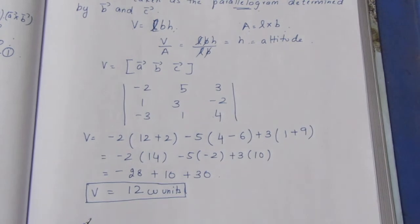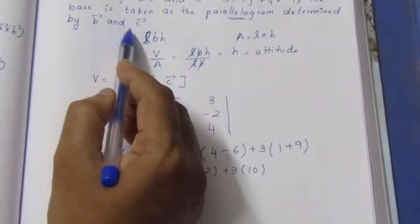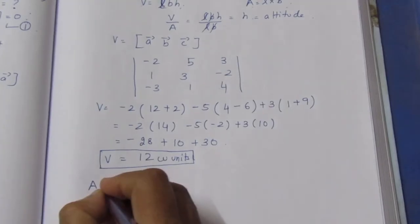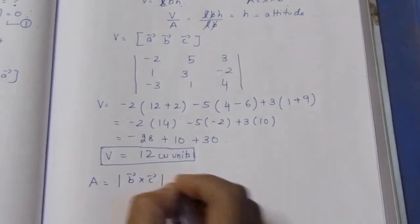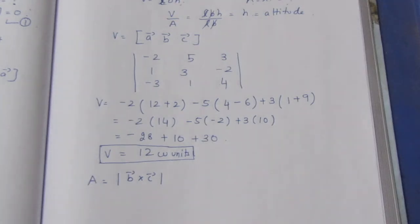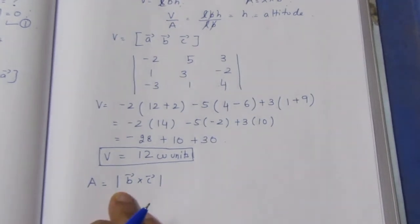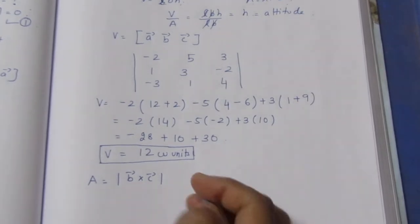Now, the area of the parallelogram base formed by B and C. The formula is the modulus of B cross C. We multiply the two side vectors using cross product.